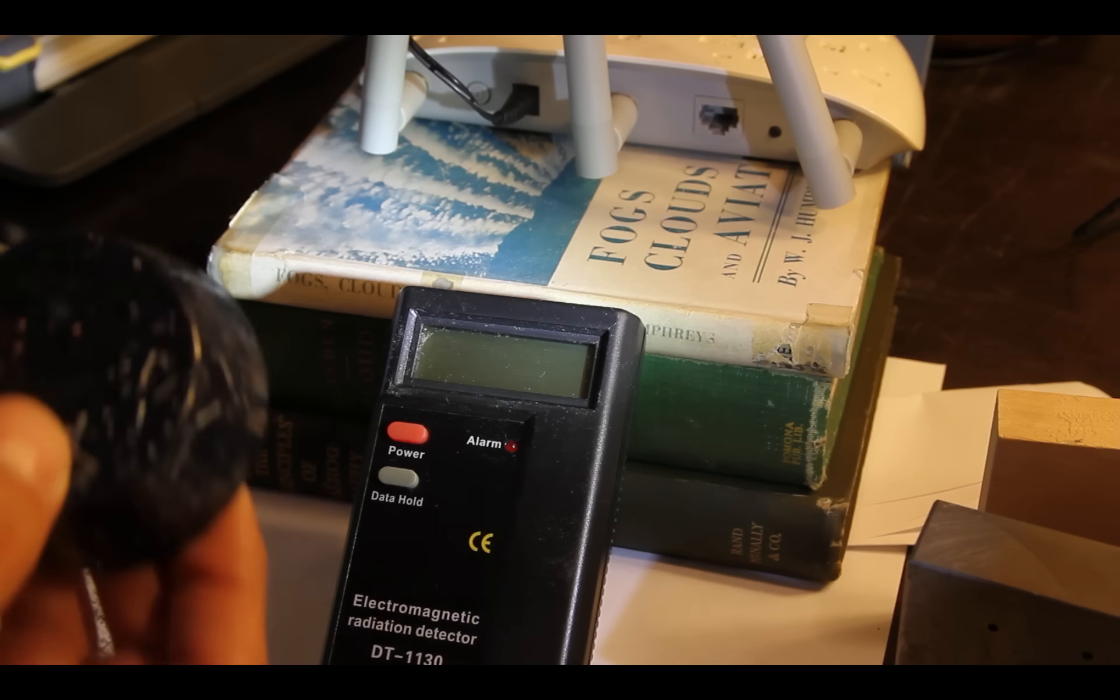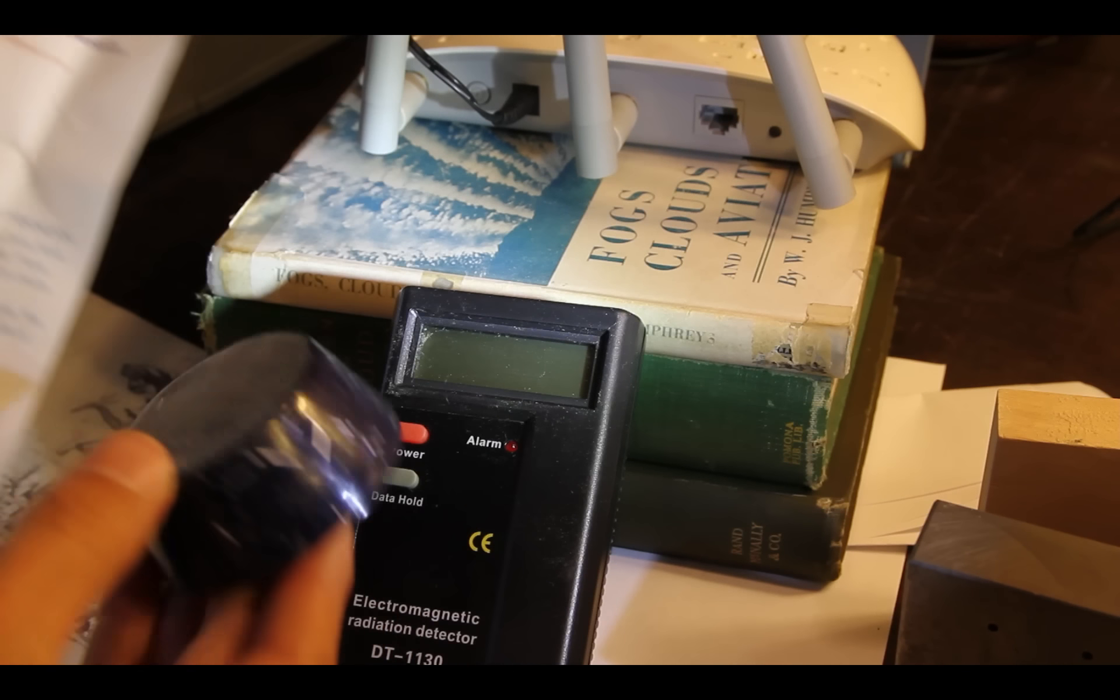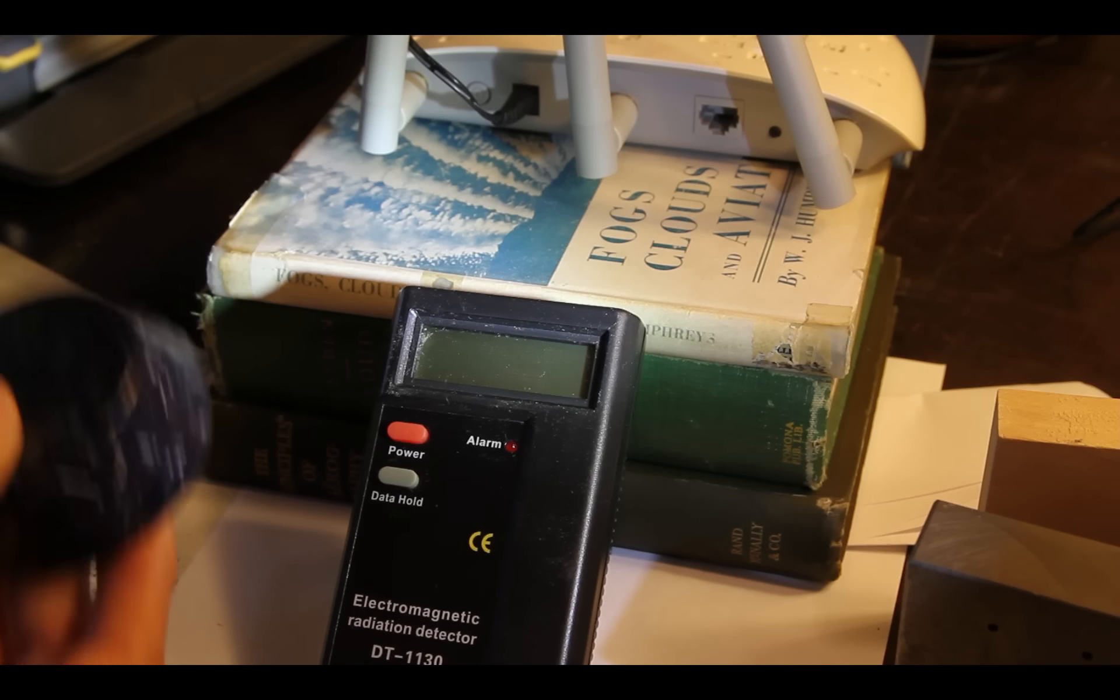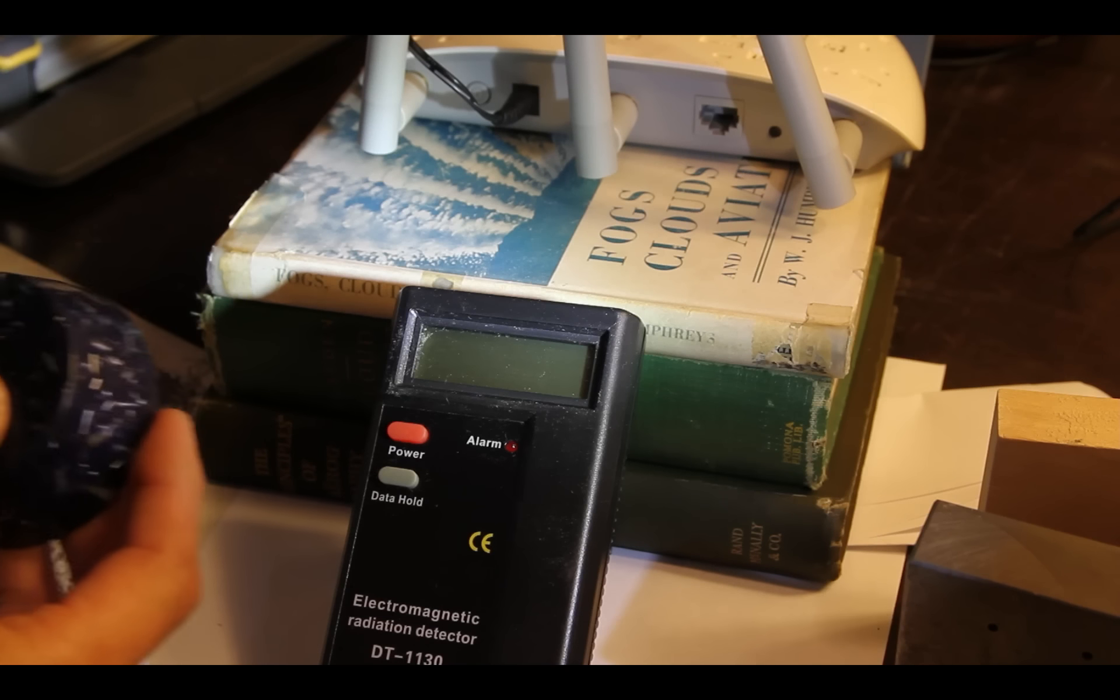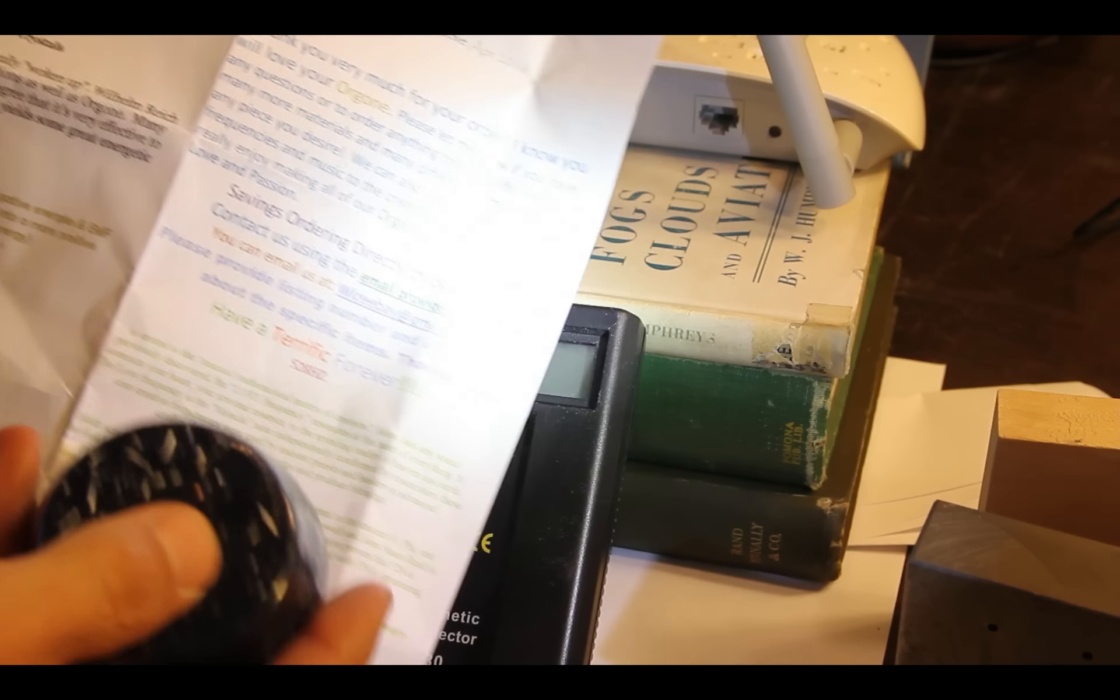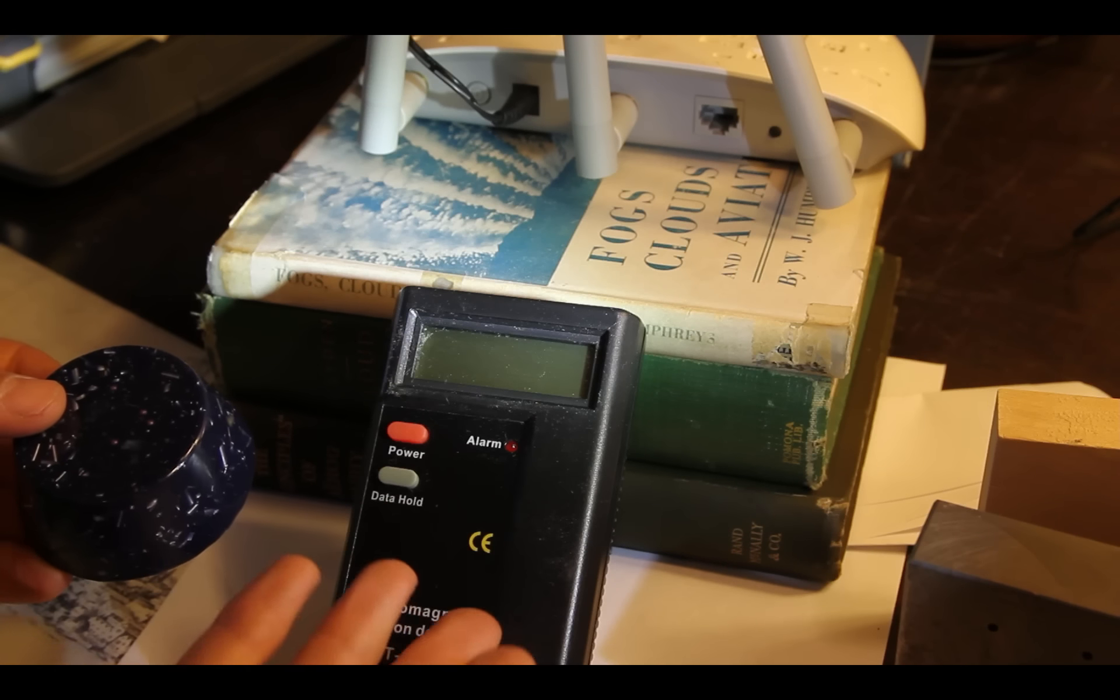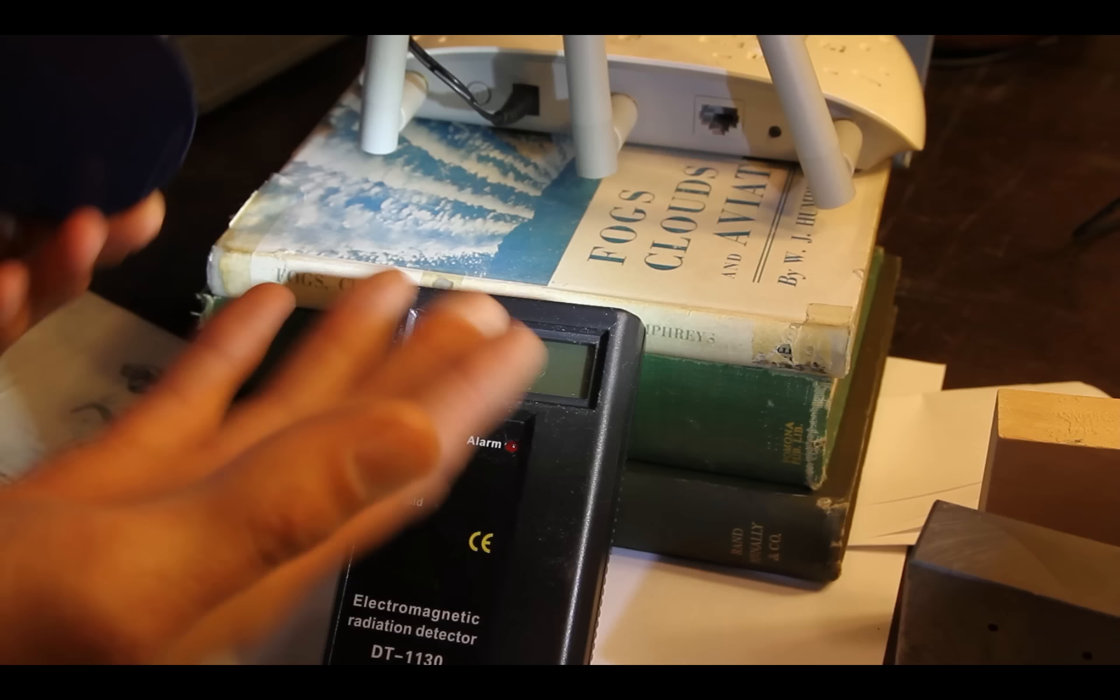This one here is an orgone tower buster. It's supposed to be used for nullifying the effects of radiation from cell phone towers. You would take one of these and put it at the base of a cell phone tower and it would help the negative vibes. And it specifically lists EMF waves here as being something it can transmute and protect you against. You see a lot of videos on the internet of people using a meter like this one and seeing if this orgonite will block the radiation.